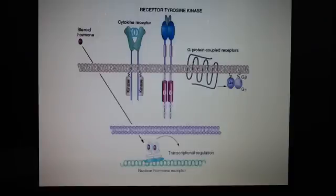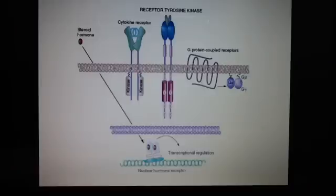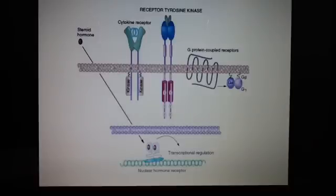We think of kinases as turning on and phosphatases as turning off, but sometimes the opposite occurs. The function is altered because there is a conformational change in the protein, which can give the protein a new function. New binding sites are created, so the protein can now interact with other specific proteins or break existing interactions.